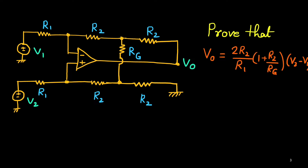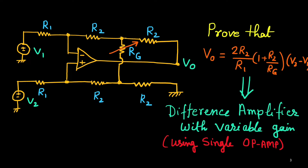RG can be varied, and if we vary RG we can vary the gain factor. This is one advantage of the circuit — we can have a difference amplifier with variable gain. Though RG is in the denominator so it is not purely linear, with the help of only one op-amp we can design a variable gain difference amplifier in this way.